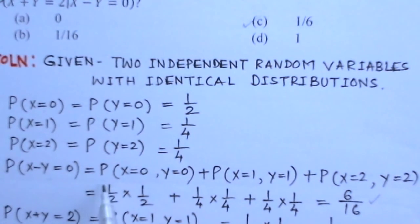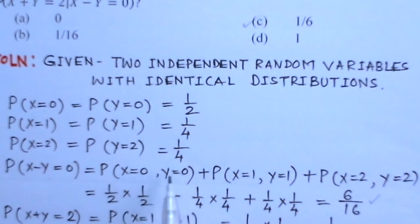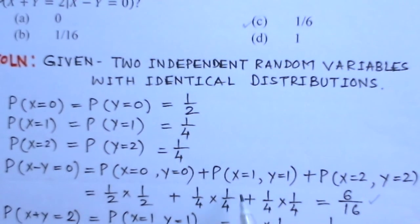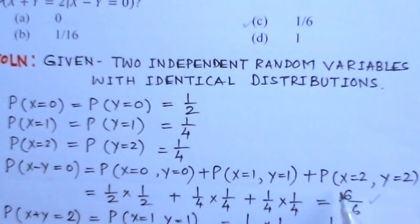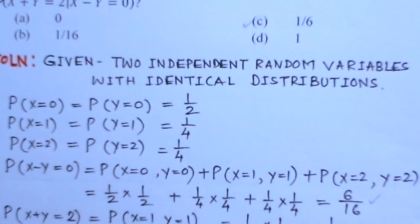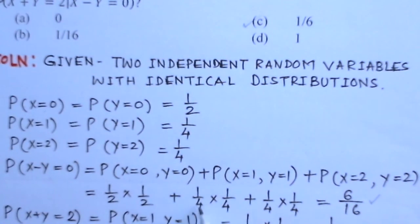X-Y=0 when X equals Y. So P(X-Y=0) = P(X=0, Y=0) + P(X=1, Y=1) + P(X=2, Y=2). Since X and Y are independent, this equals (1/2)(1/2) + (1/4)(1/4) + (1/4)(1/4) = 1/4 + 1/16 + 1/16 = 6/16.